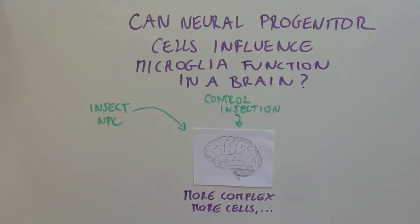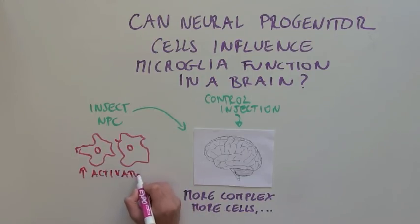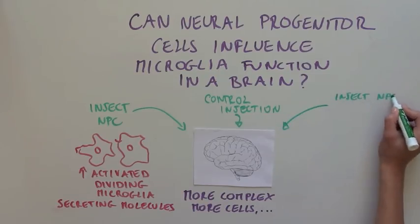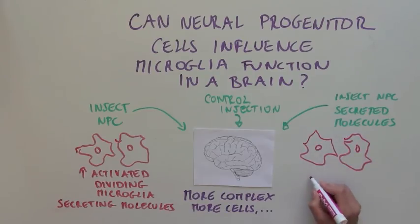What the scientists saw was that at the site of the injection where there were many NPCs and NPC-secreted molecules, there were a lot more microglia, a lot more activated microglia that were dividing and secreting their own secreted molecules. If the scientists injected NPC-secreted molecules in mouse brains instead of NPCs themselves, they saw the same effect on microglia function.